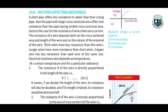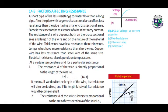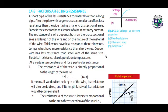Factors affecting resistance. A short pipe offers less resistance to water flow than a long pipe. Also, a pipe with larger cross-sectional area offers less resistance than a pipe with small cross-sectional area. The same applies to resistance of wires that carry current. The resistance of a wire depends on the cross-sectional area, the length of the wire, and the nature of the material. Thick wires have less resistance than thin wires. Longer wires have more resistance than short wires. Copper wire has less resistance than steel wires of the same size.